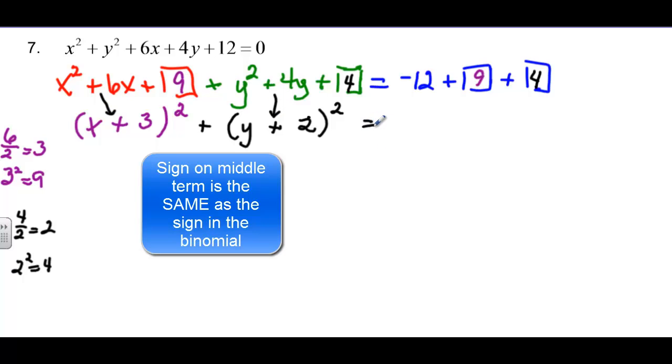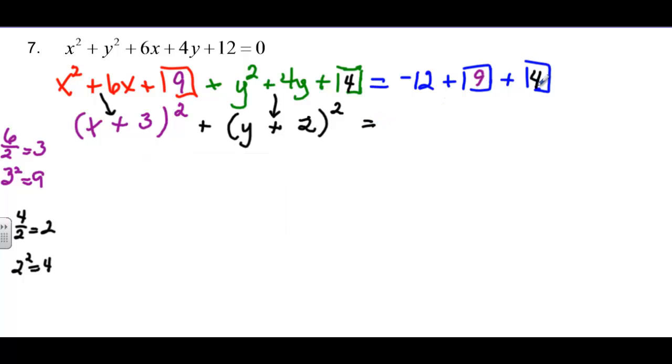And then we just have to add and see what we have. So 9 and 4 is going to be 13 minus 12 will be equal to 1. So the center is going to be hk, which is the opposite sign. So it's negative 3 for h, and negative 2 for k. r squared is equal to 1, so that makes r equal to the square root of 1, which we know to be 1. Here's our r, and here's our center.